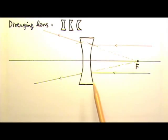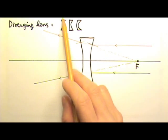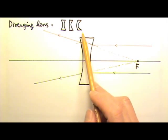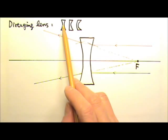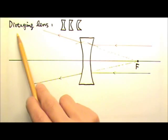A diverging lens does not have to be shaped like this. It can also be like this or that. As long as it is thinner in the middle, it is a diverging lens.